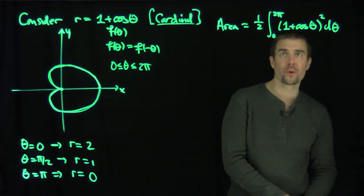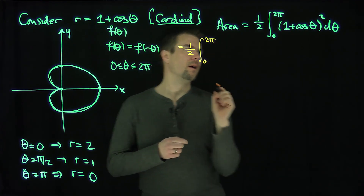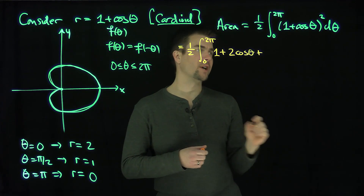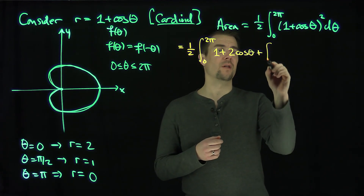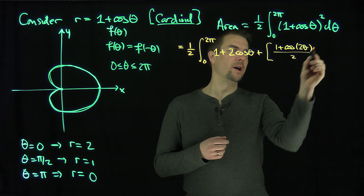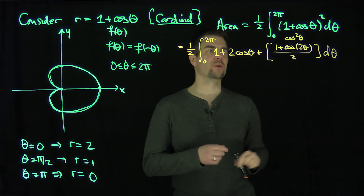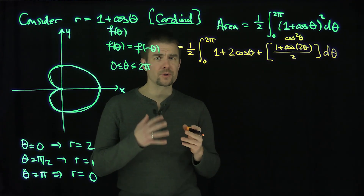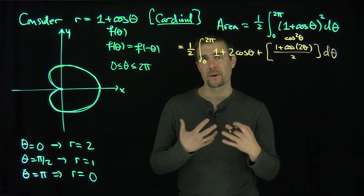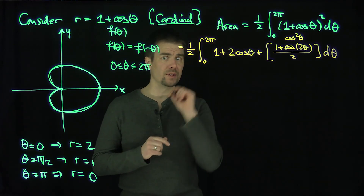Let's compute this. We get one half integral from zero to two pi of one plus two cosine of theta plus cosine squared of theta — after FOILing it out. We immediately use power reduction on cosine squared: that's (1 plus cosine of 2 theta) all divided by two. When doing these polar integrals, you will often use this power reduction identity because you're squaring trigonometric functions. If it were sine squared, that plus would turn into a minus.